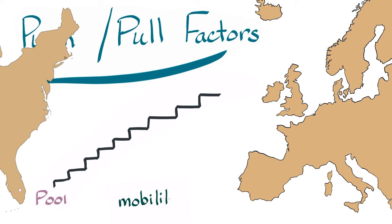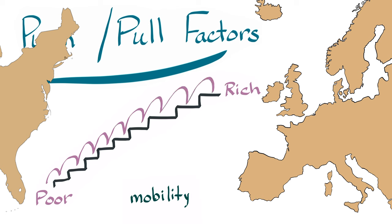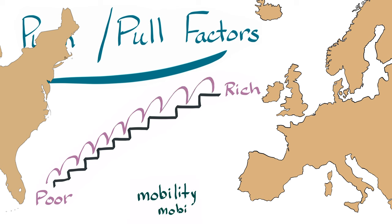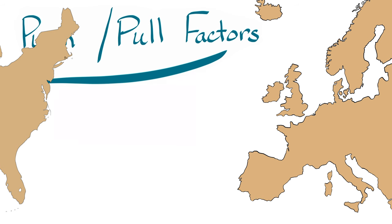For social, or society, reasons: a pull factor in America was that people had mobility — they could start out life poor and work their way up. A push factor from Europe was that many people born in a lower station in life were stuck and could not work their way up.